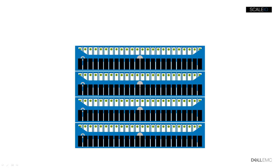As additional nodes are added and their drives are added to the storage pool, the system can recover from failures more rapidly, as there is proportionally less data to reconstruct if a node or drive is lost, and there will be more nodes working in parallel to re-establish data protection.